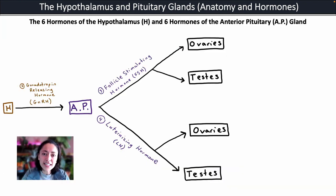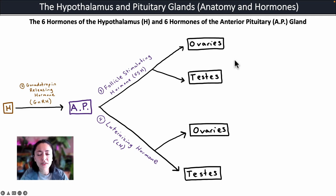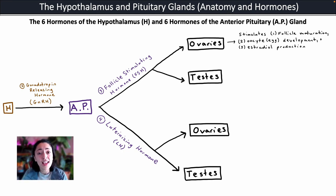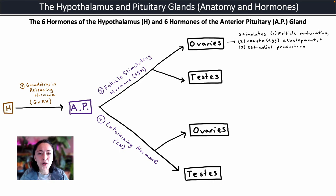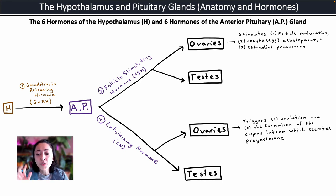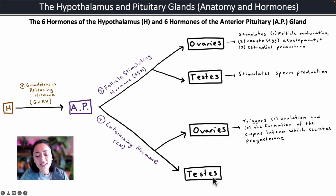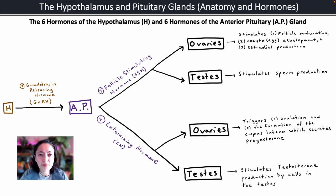So what are the effects of FSH on the ovaries? It stimulated follicle maturation, it stimulated the oocyte to continue its development, and it triggered estradiol production from those follicles. Luteinizing hormone caused ovulation to occur and then the formation of the corpus luteum, which secretes progesterone. FSH and LH are also produced in males: FSH targeting the testes stimulates sperm production, and luteinizing hormone targeting the testes stimulates testosterone production by cells within the testes.